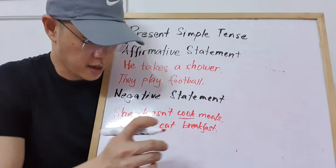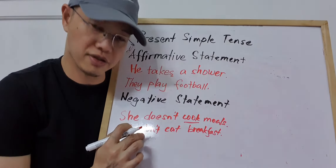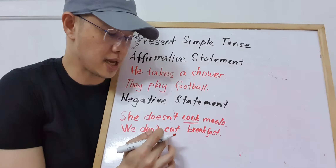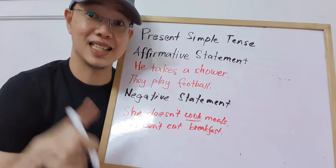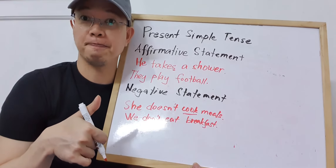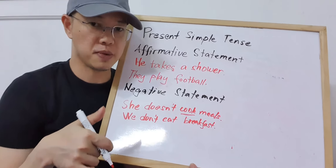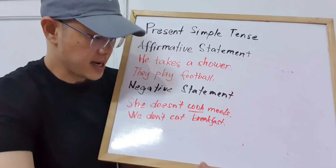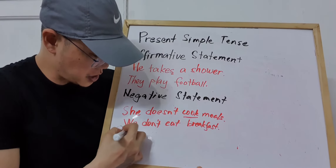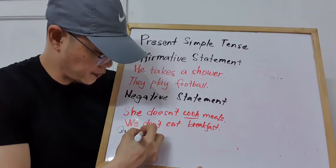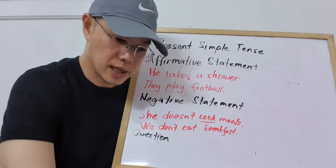Another example with a plural subject: 'We don't eat breakfast.' Please don't skip breakfast — it's the most important meal! So you have 'we,' a plural subject, then 'don't,' and then the base form 'eat.' It's very easy to remember.